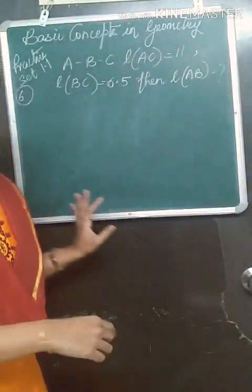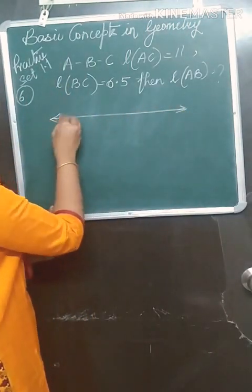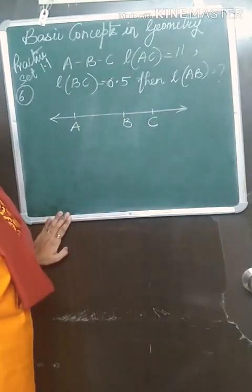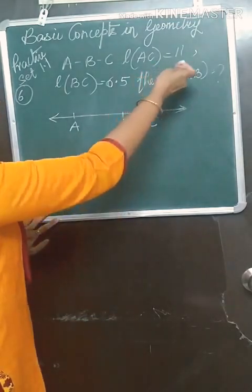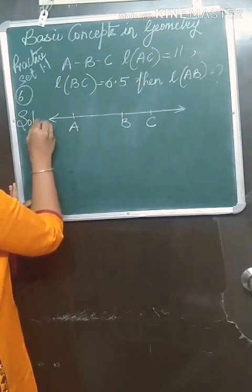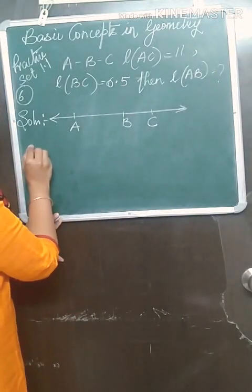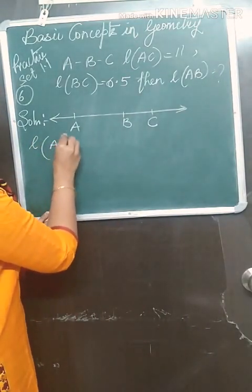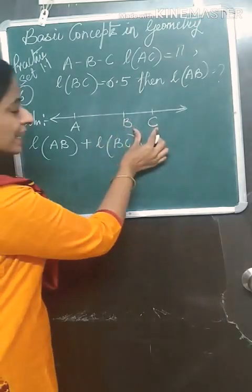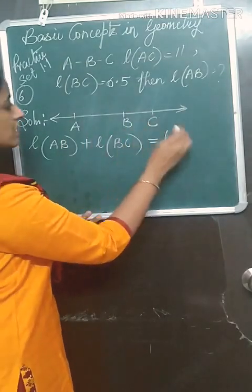Very simple. A-B-C — draw the proper figure: A, then B, then C. AC is given as 11. According to the figure, by the betweenness property, length of AB plus length of BC is equal to length of AC.